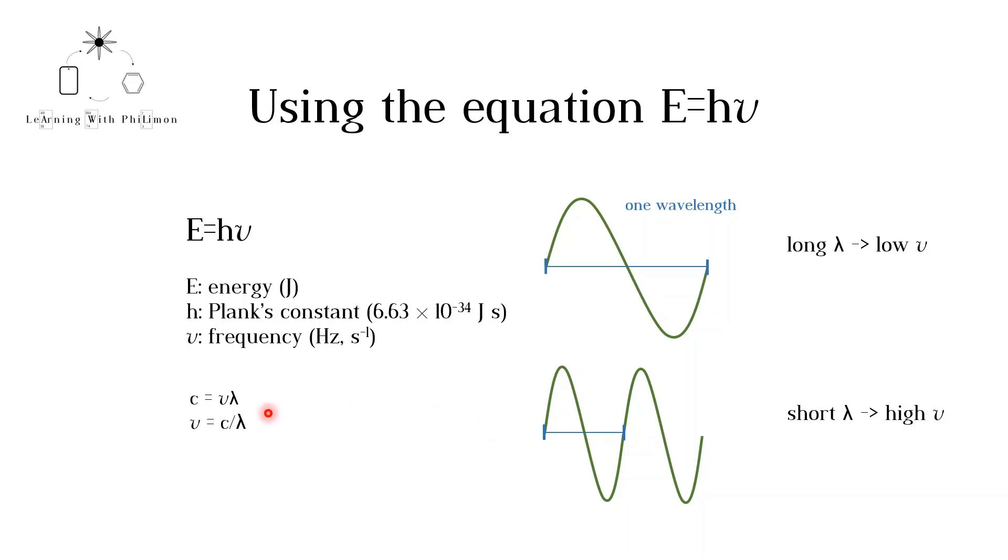Substituting this equation into Planck's equation, we get the following. E equals hc divided by lambda.